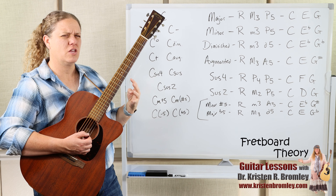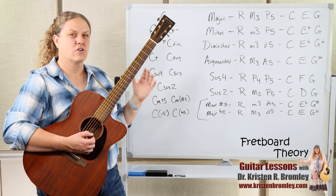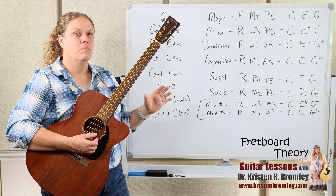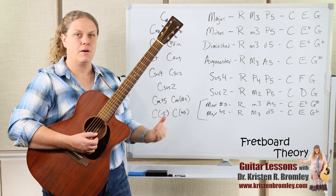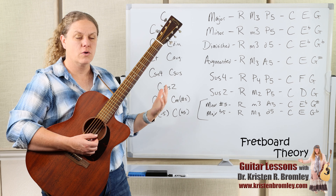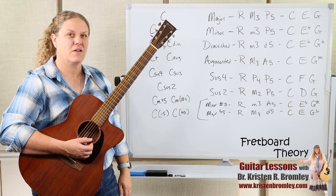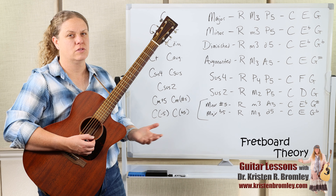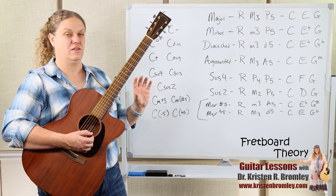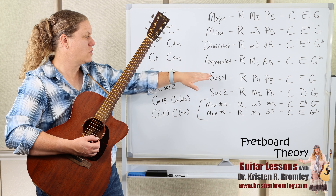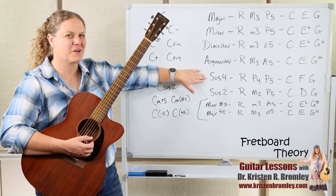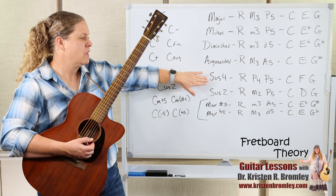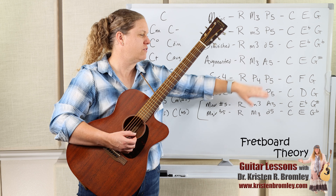Those are our four main traditional triad types that we'd talk about in classical music theory. But when we're playing guitar in pop, jazz, rock, and folk, sometimes we have other chord types that we actually treat as chords. One super common type on guitar is the suspended four chord. These have the root, the perfect fourth, and the perfect fifth.